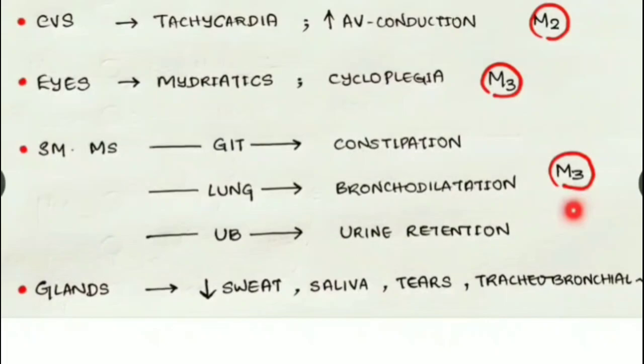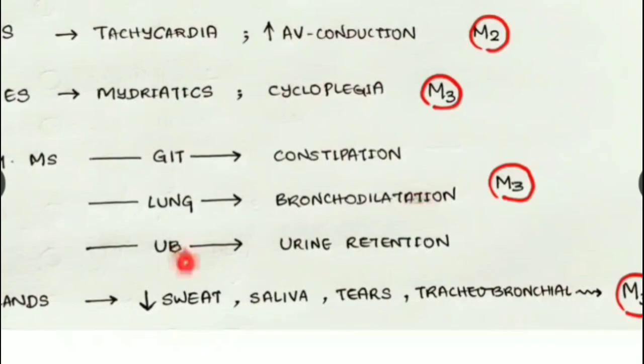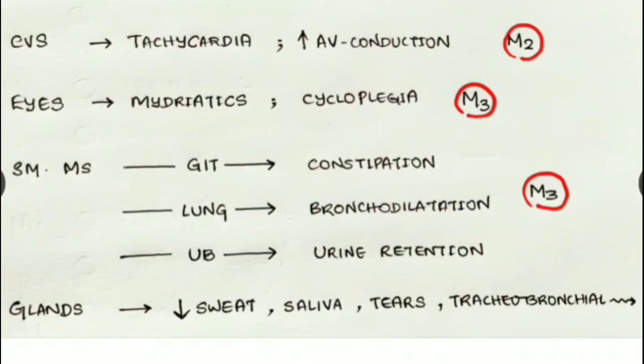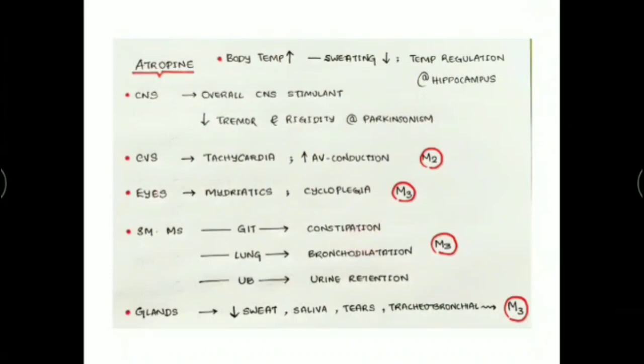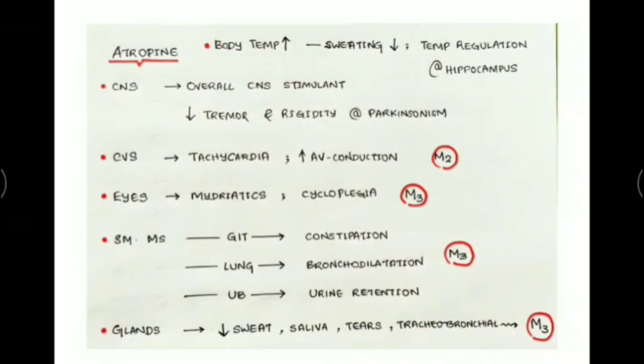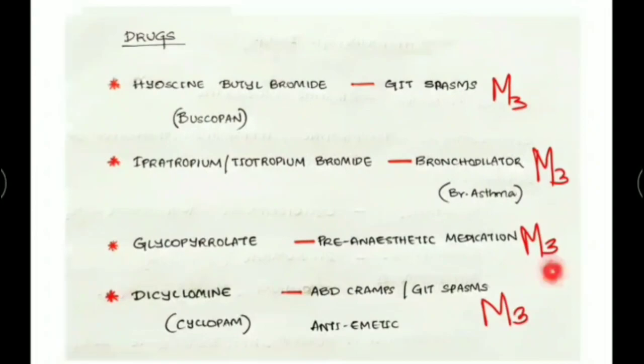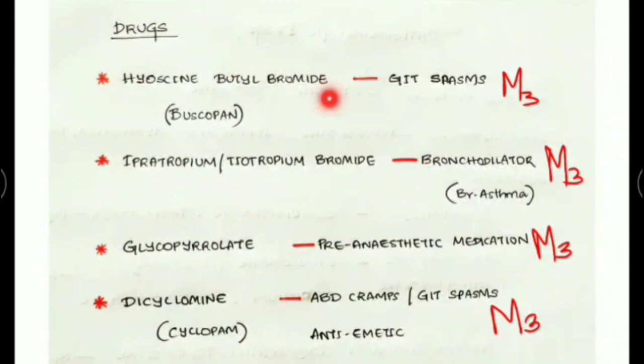By inhibiting M3 receptors at smooth muscles of the GIT, atropine causes constipation. In the lungs, it causes bronchodilation. In the urinary bladder, it causes urine retention — all opposite to the actions of ACh. By inhibiting M3 receptors in the glands, it reduces secretion: reduced sweat, saliva, tears, and tracheobronchial secretions.